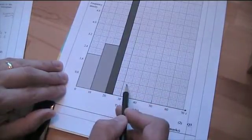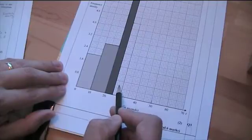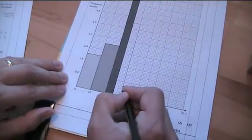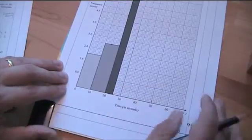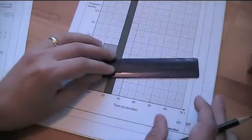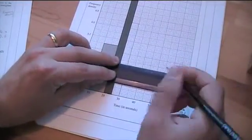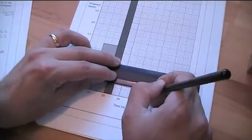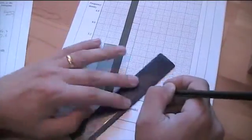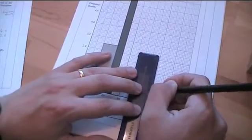This goes up to 0.8. So, 0.4 would be there and 0.6 is halfway between. So, that's there. Now, I can draw my line across there and complete the box.